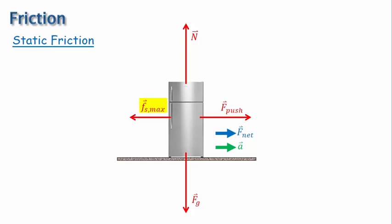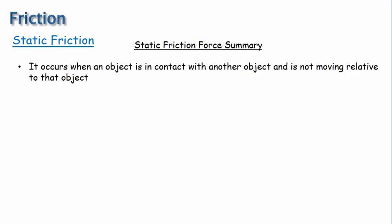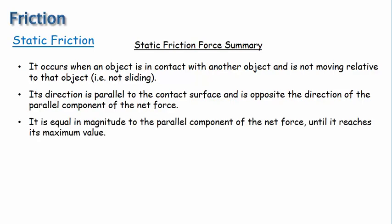Let's summarize the behavior of static friction just described, plus a few more details. The first fact is that the static friction force occurs when an object is in contact with another object and not moving relative to that object — that is to say, it's not sliding. Its direction is parallel to the contact surface and is opposite the direction of the parallel component of the net force. And it is equal in magnitude to the parallel component of the net force until it reaches its maximum value, so its magnitude varies from zero to its max value.